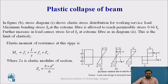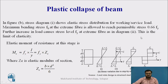Stress diagram 1 shows the elastic stress distribution for working or service load. Here the maximum bending stress FB at the extreme fiber is allowed to reach the permissible stress, which is equal to 0.66 FY. So FB is equal to 0.66 FY, or we can say FB is less than FY — this is known as the elastic stress distribution. The second diagram represents the limit of elasticity, where FB is equal to FY.